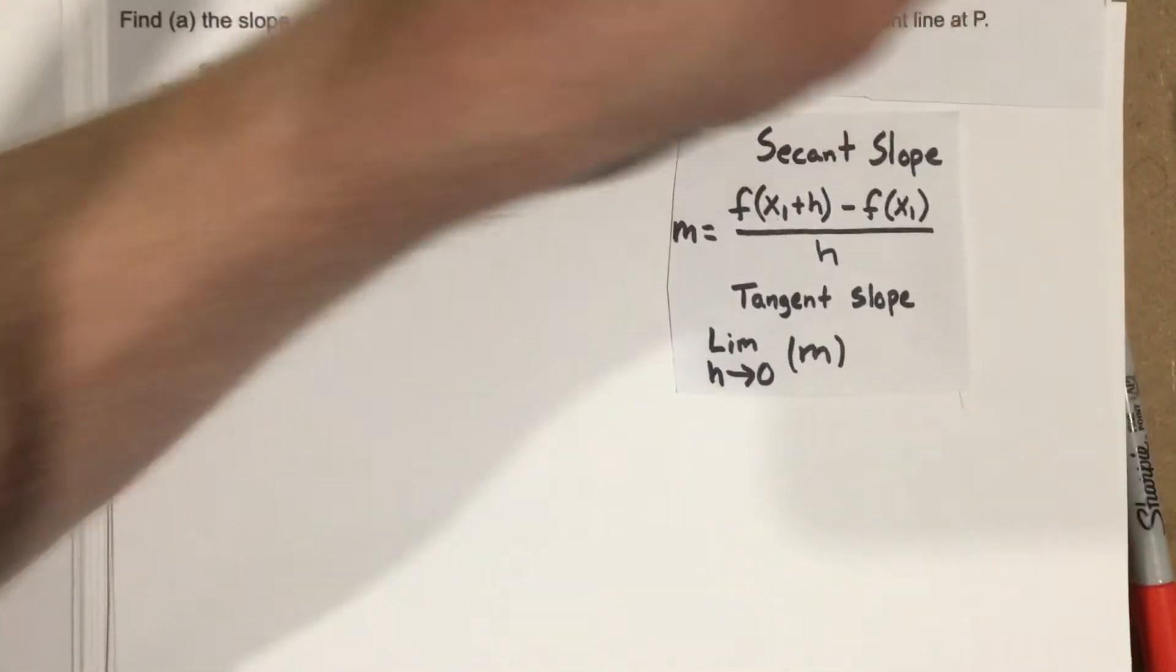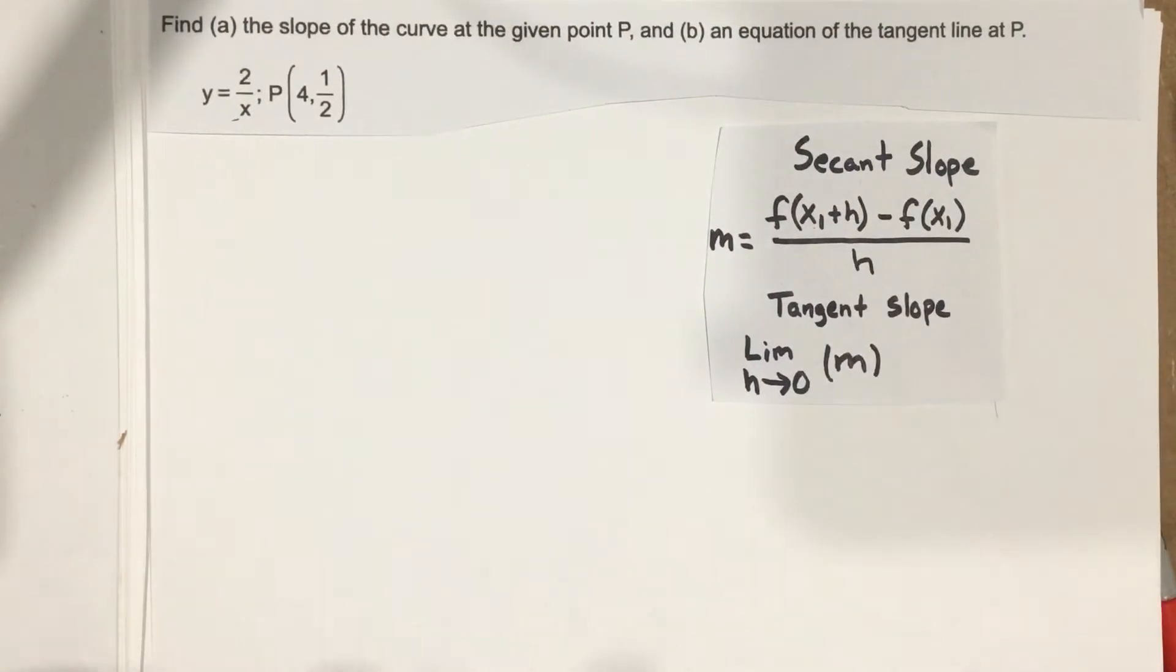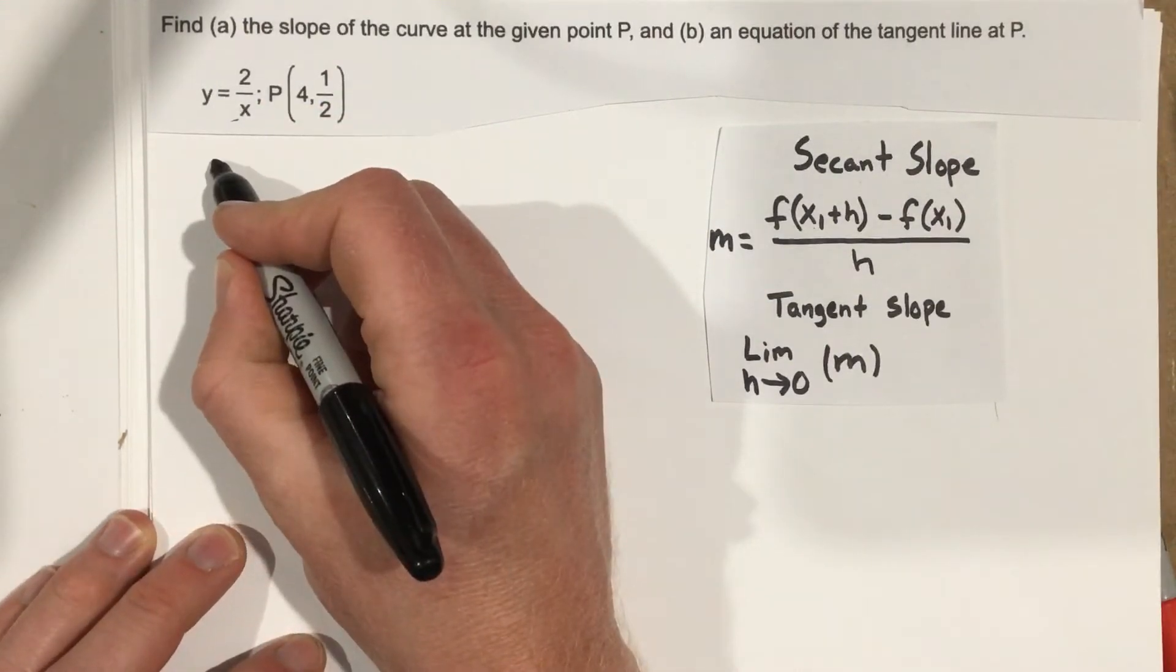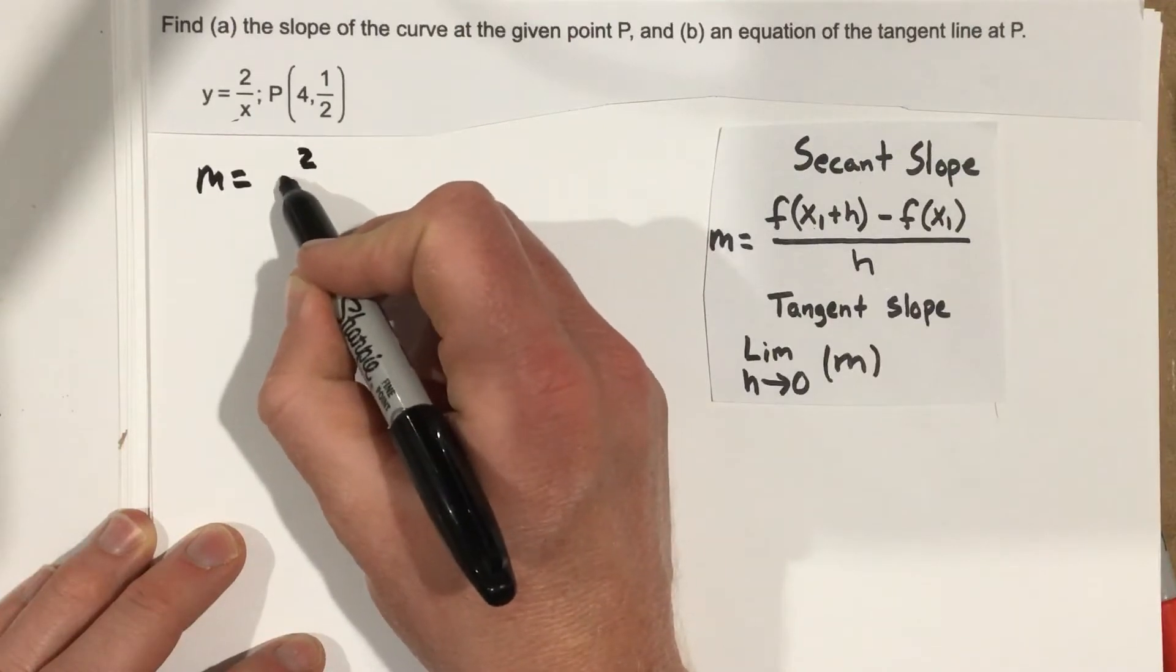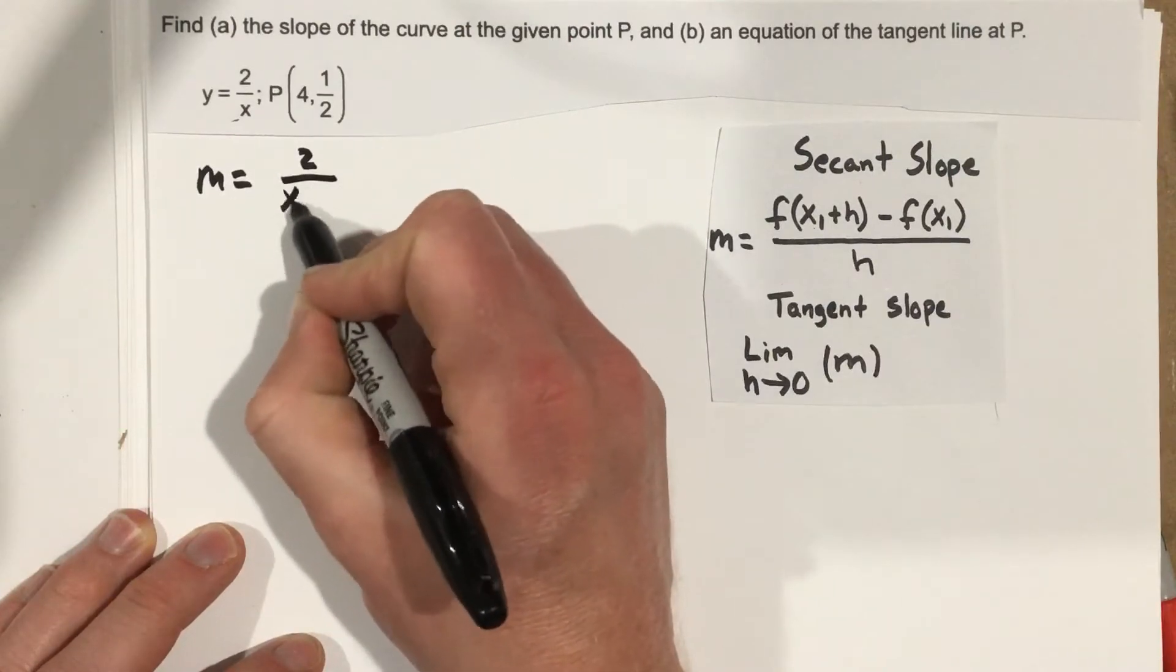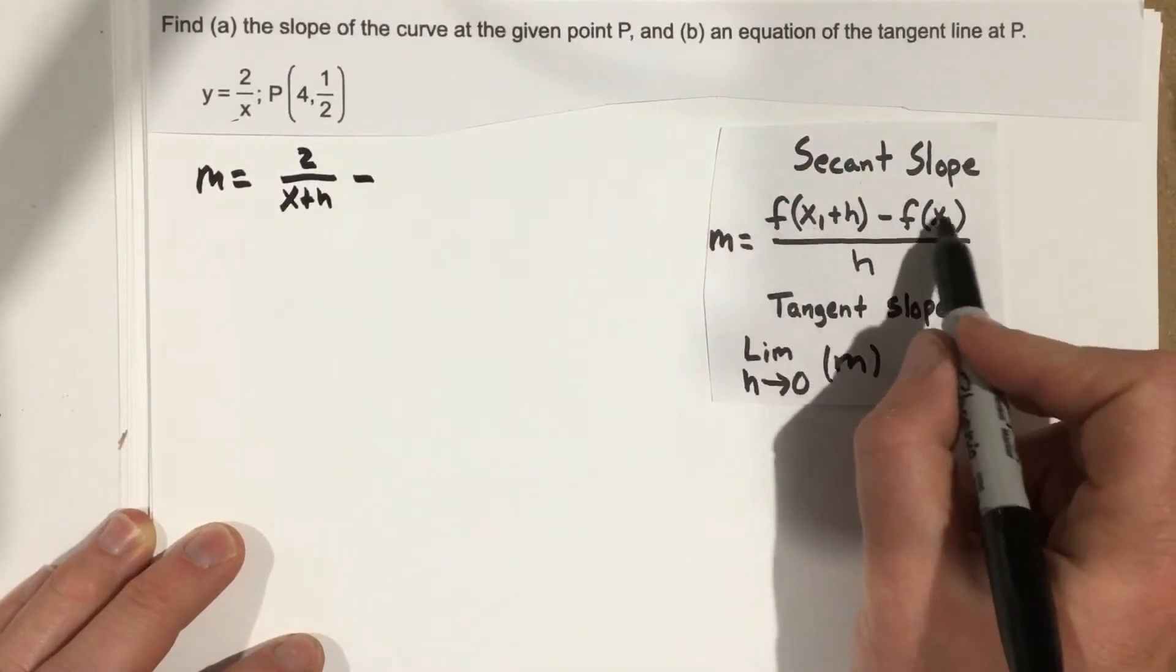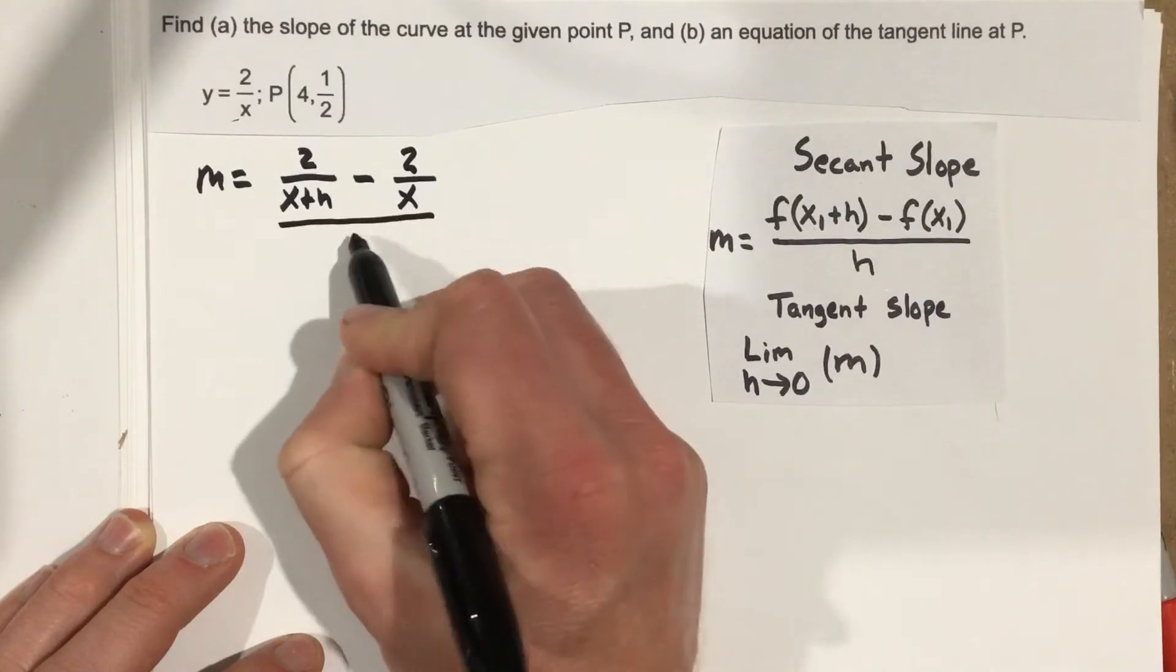So let's go ahead and start by plugging in x plus h. So we're going to have m equals 2 over x plus h minus when we plug in just the function, we get 2 over x, all over h.